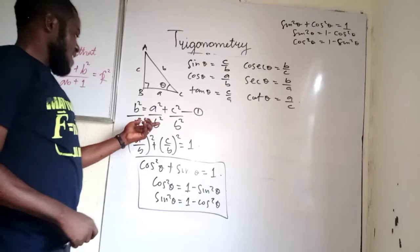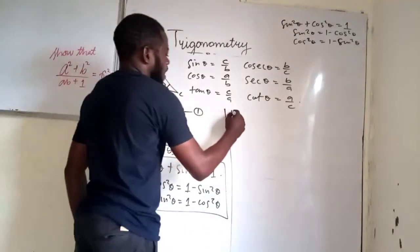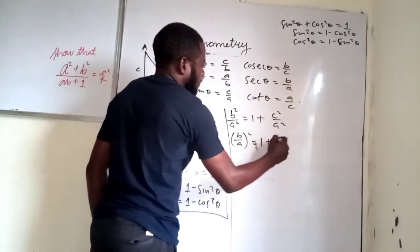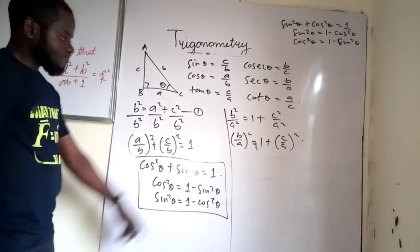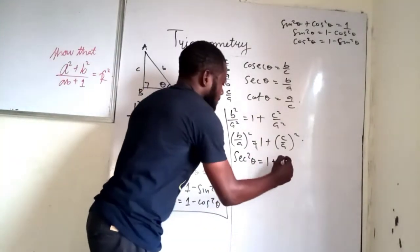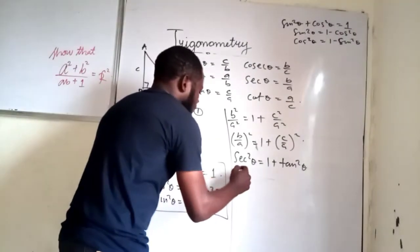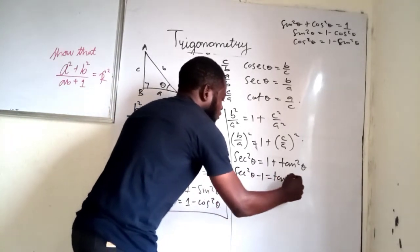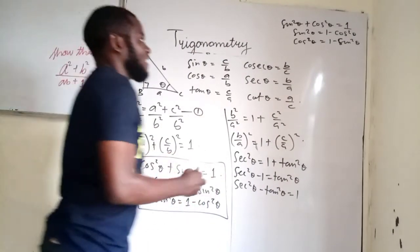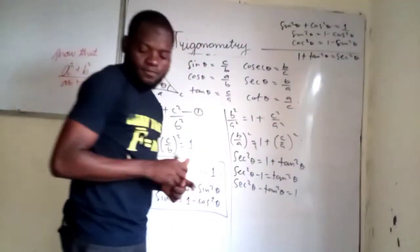For the second identity, divide equation one through by a². We get (b/a)² = 1 + (c/a)². Now b/a is secant theta and c/a is tangent theta. So sec²θ = 1 + tan²θ. This is our second identity. We can also write it as sec²θ − tan²θ = 1, or sec²θ − 1 = tan²θ.